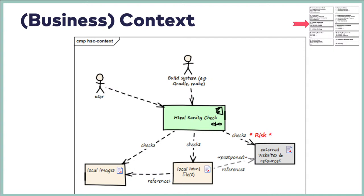The third part of ARC42 begins diving into the environment of the system — not into the system itself, but its context. Part three shows the external interfaces: data, events, or control flow triggering the system, data flowing in and flowing out. In our case it's very simple: we have a user triggering something, a build system like Maven or Gradle using our system, and external interfaces to the file system and the Internet. Your system has a black box contained in this third part of ARC42 — the context.